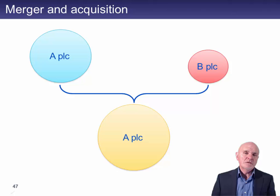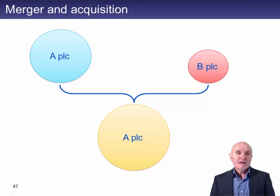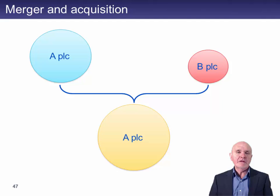We've looked at generic strategies and we've looked at strategic direction, like going into a new market or a new product. Now we have to look at how the strategic directions might possibly be achieved. The first two methods we're going to be looking at are merger and acquisition, and then organic growth.